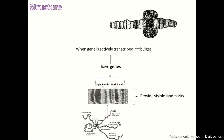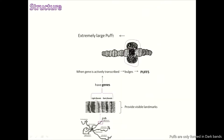These bulged regions are called puffs, where RNA transcription is actively occurring. The region swells up due to active transcription. Extremely large puffs are called Balbiani rings.